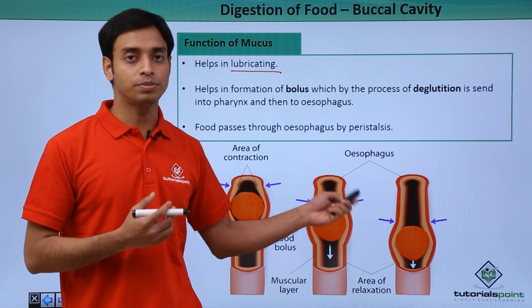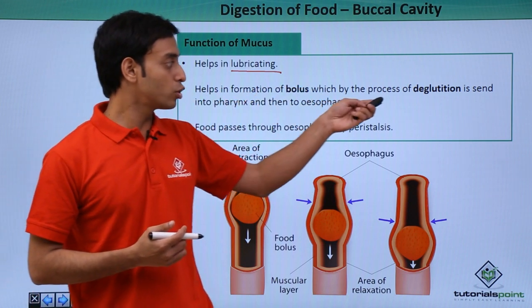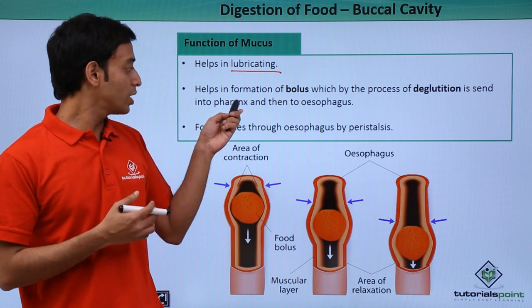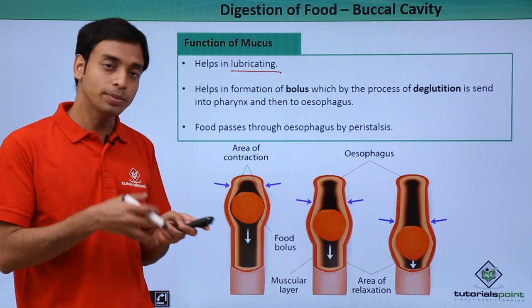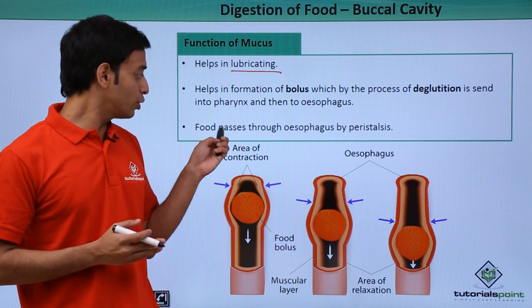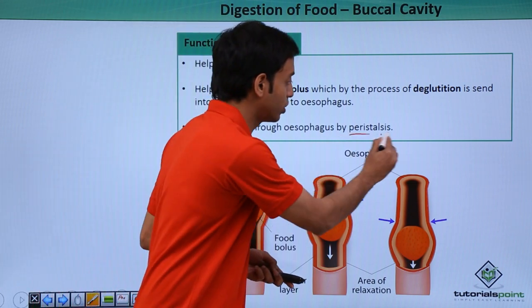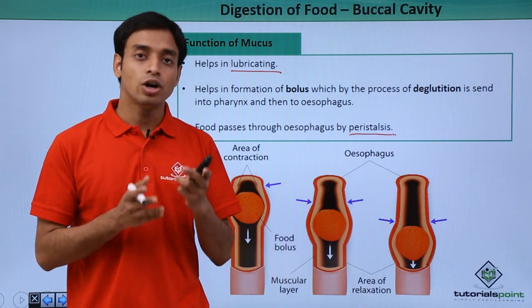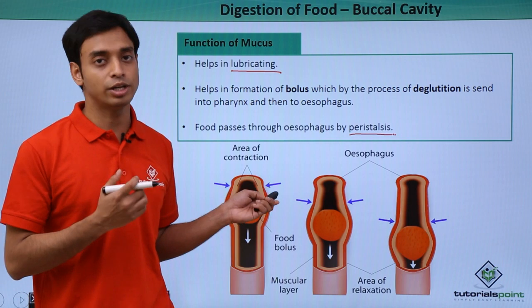Mucus helps in the formation of bolus by the process of deglutition, and this bolus is sent into the pharynx and then to the esophagus. The bolus structure is pushed into the esophagus with the help of the tongue. Food in the esophagus then passes by a process known as peristalsis.